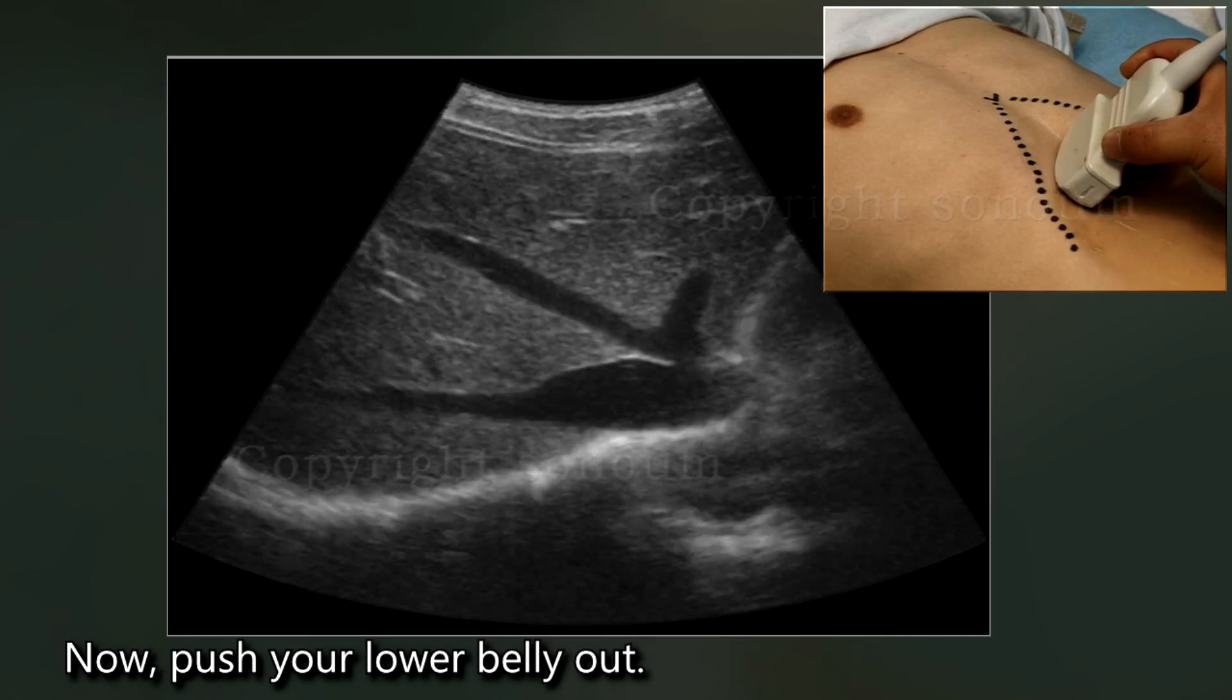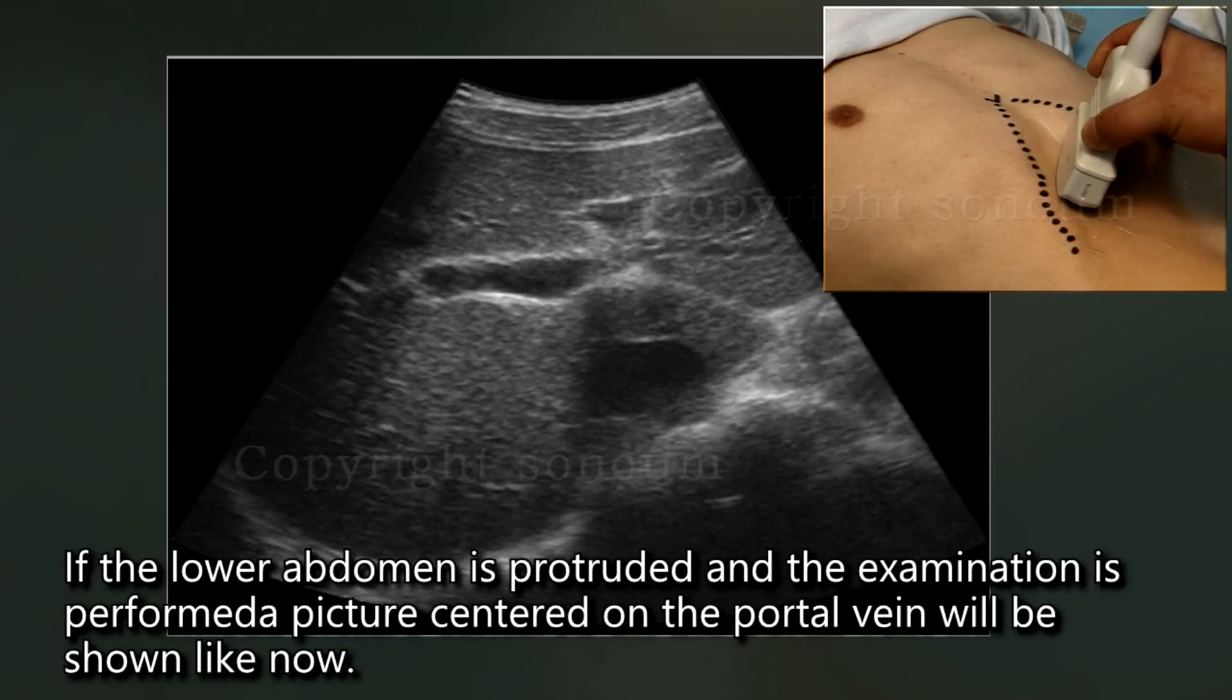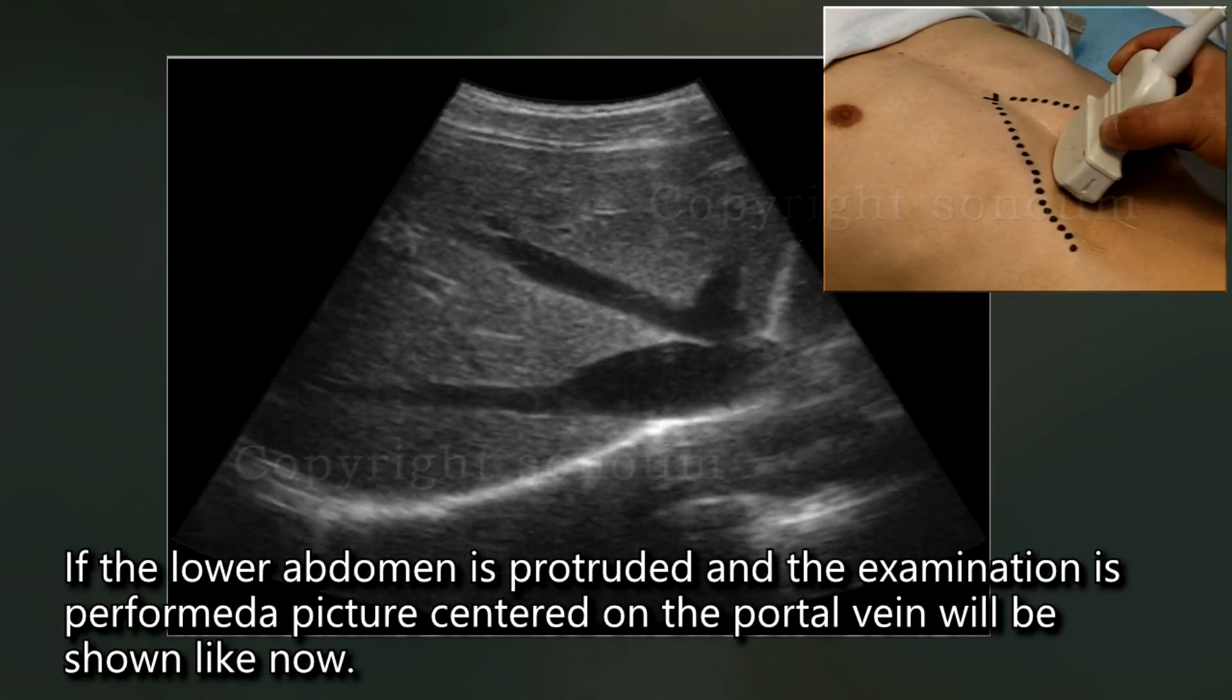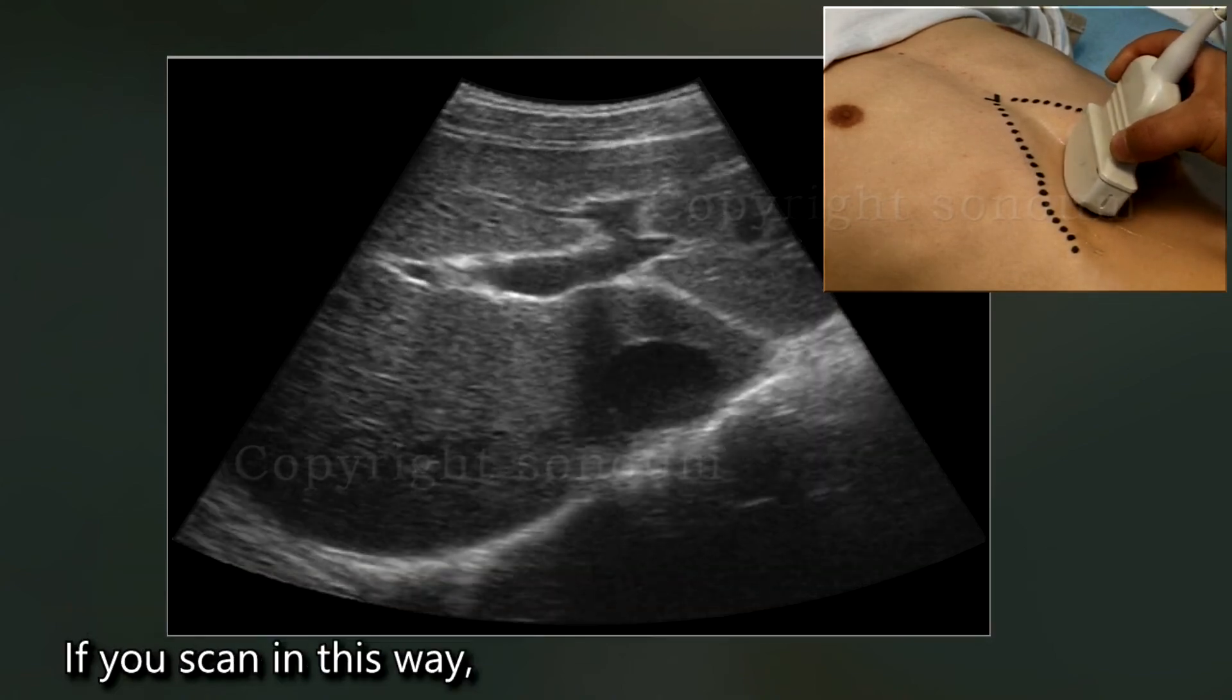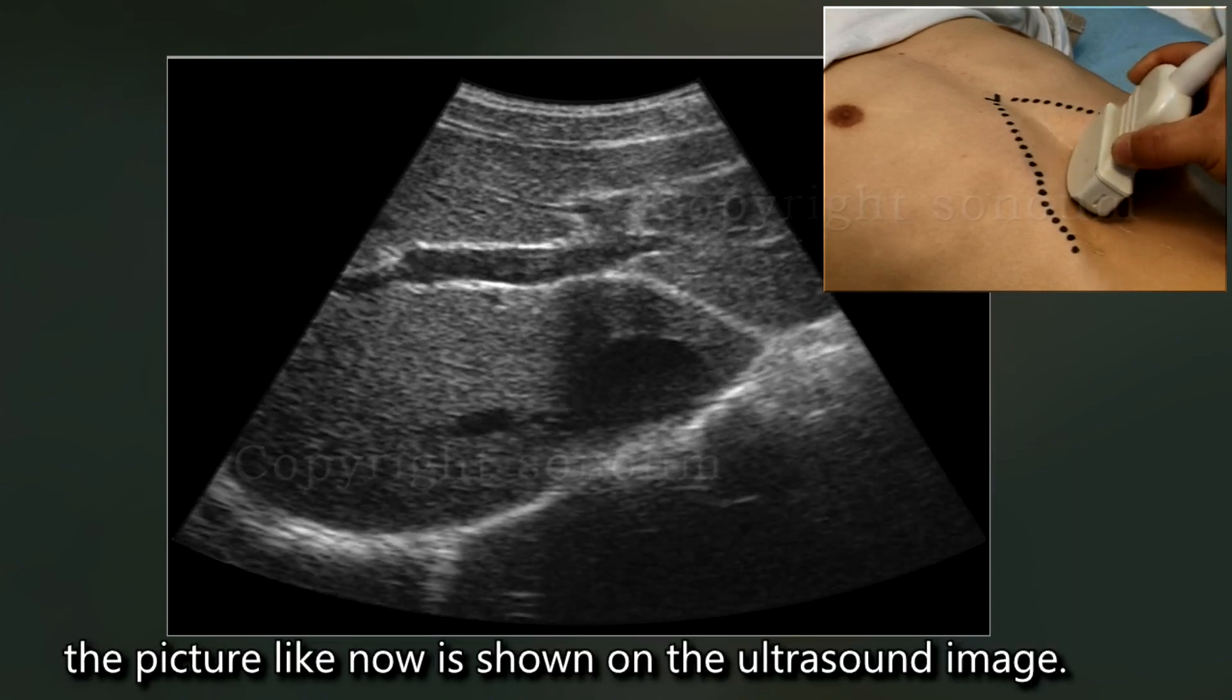Now, push your lower belly out. If the lower abdomen is protruded and the examination is performed, a picture centered on the portal vein will be shown like now. If you scan in this way, the picture like now is shown on the ultrasound image.